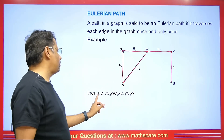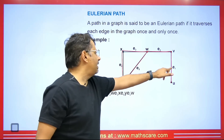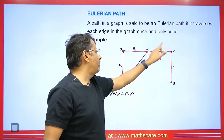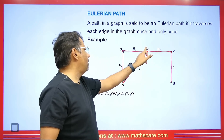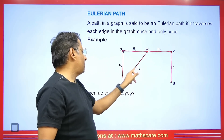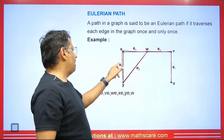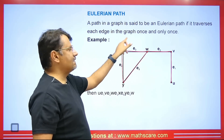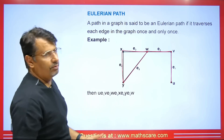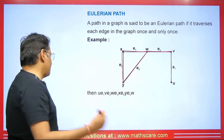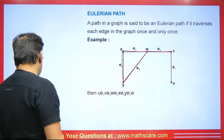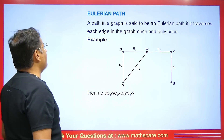We write the Eulerian path like this: U, E1, V, E2, W, E5, Y, E4, X, E3, W. This is how we understand the Eulerian path notation — listing alternating vertices and edges.